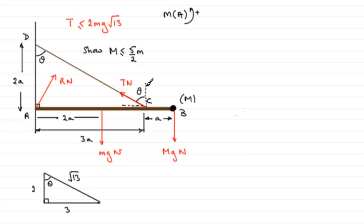That's this component here perpendicular to the plane. So T cos theta multiplied by the distance to A, which is going to be 3A. So we've got that times 3A.